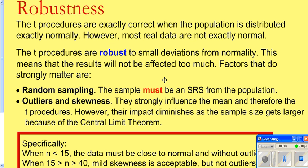So how robust, how reliable are the T procedures? Well, it works great when it's exactly normally distributed. However, most data is not perfectly normal. Well, how robust are the T procedures when they're not normal?